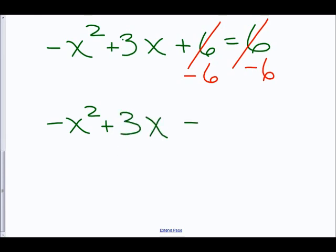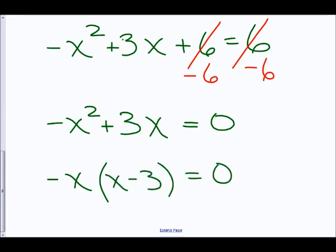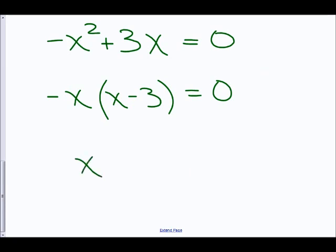So we're going to factor out a negative x yielding negative x times x minus 3, because 3x divided by negative x is negative 3, equals 0. And this means that x is equal to 0 and positive 3.